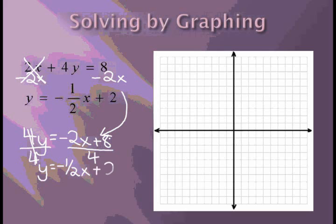This is called infinitely many solutions because they have the same slope and y-intercepts. They will have the same points plotted so everything will be the same.